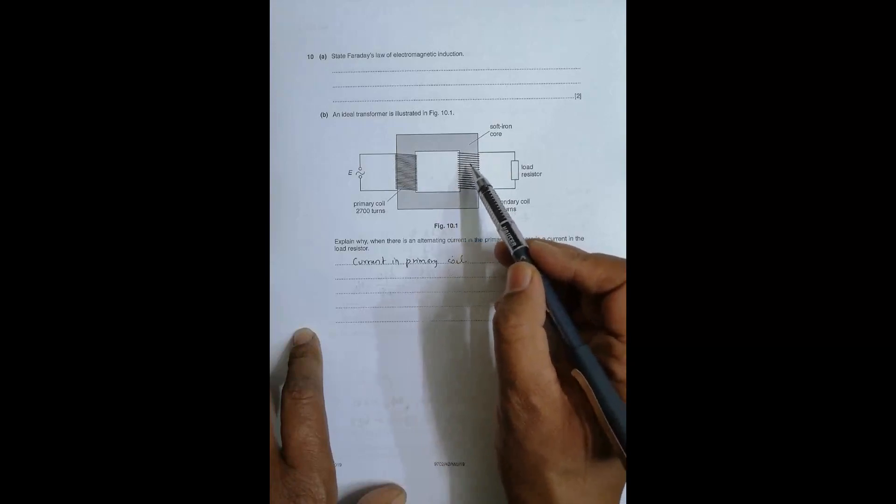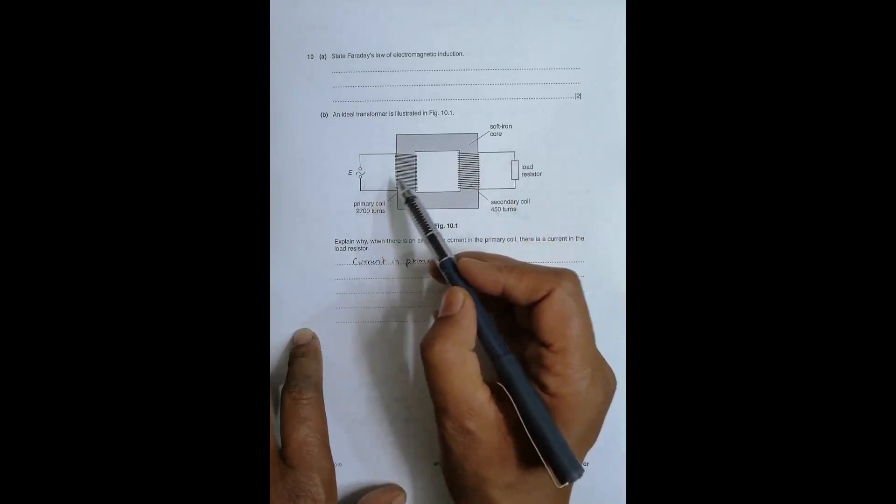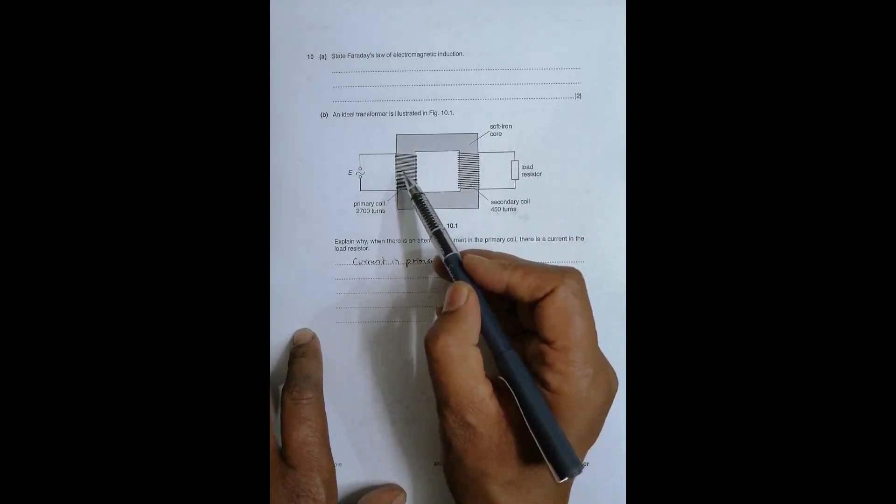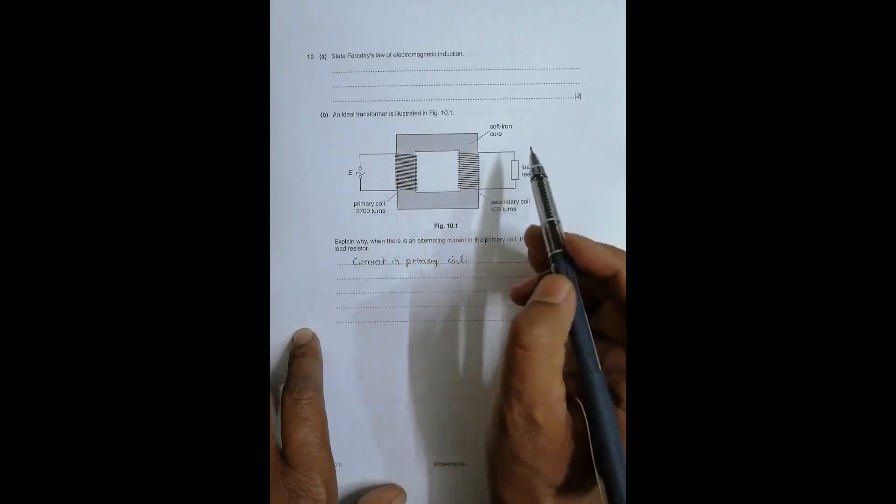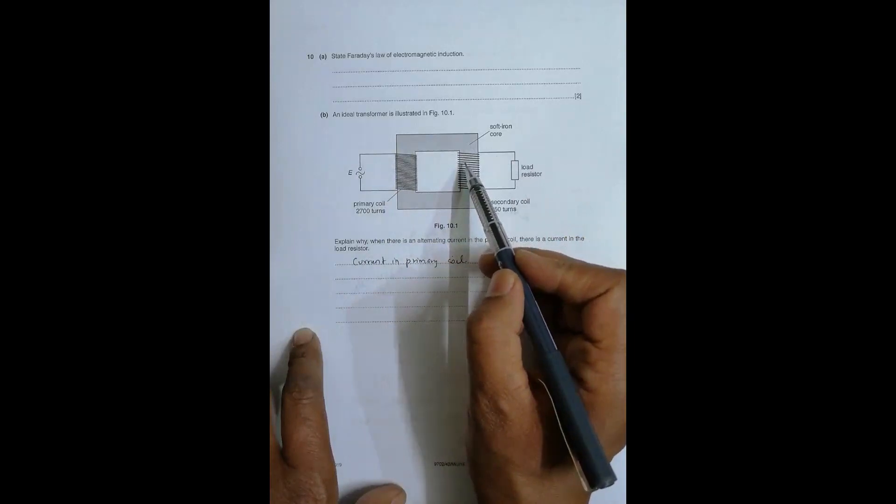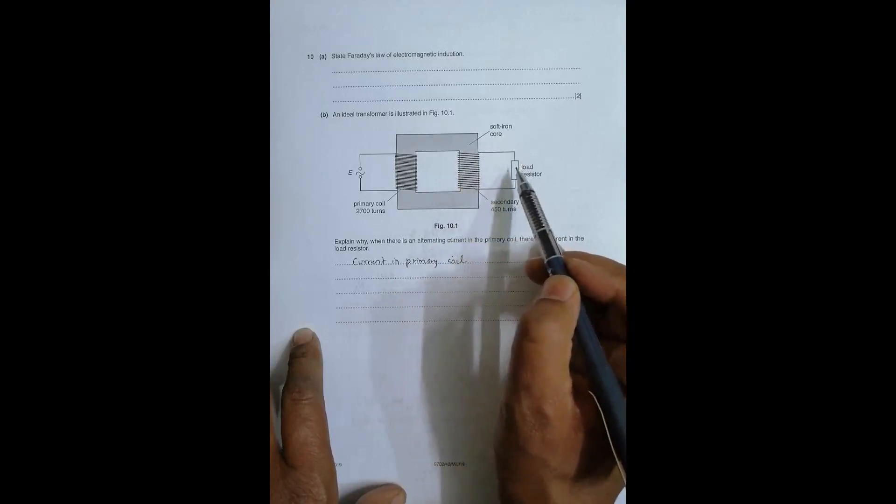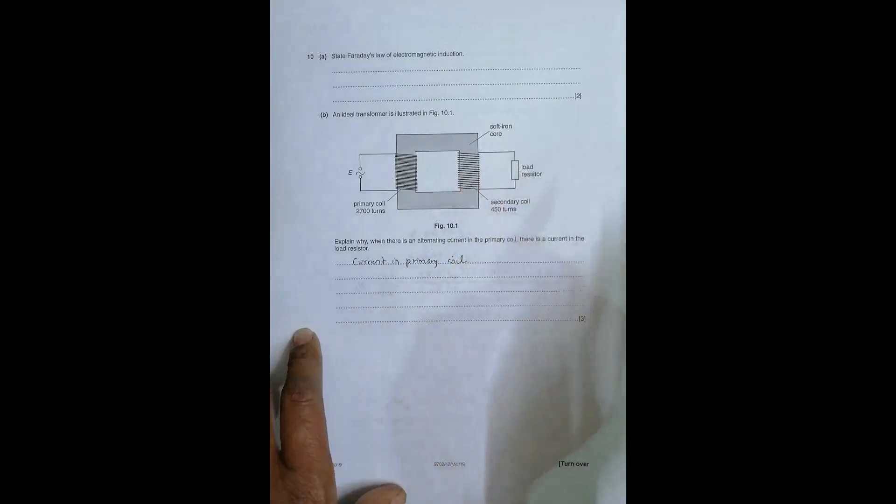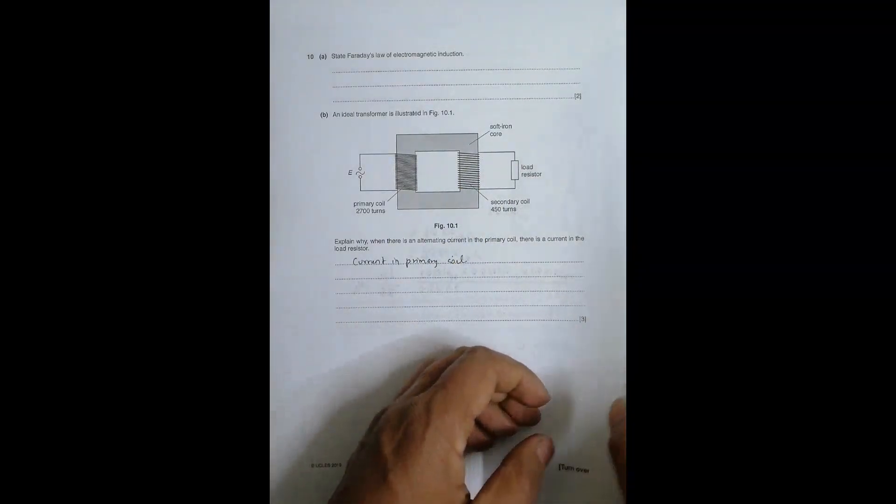Because of that EMF there will be current. So there are four steps: current produces magnetic field, the magnetic field links through the iron core, since it changes the flux also changes, and the changing flux in this closed coil gives us an EMF. This EMF produces current in the load resistor.